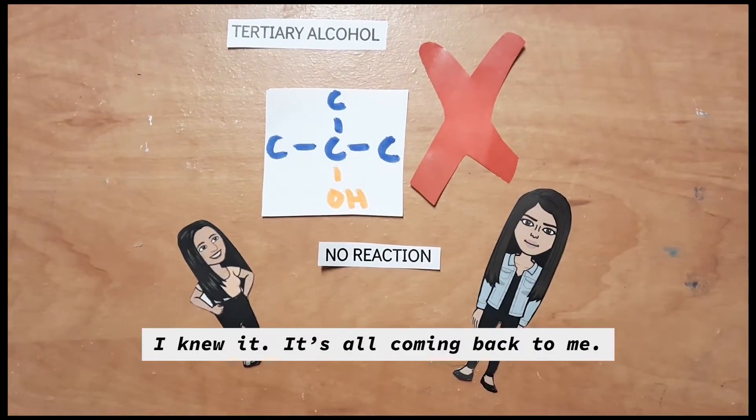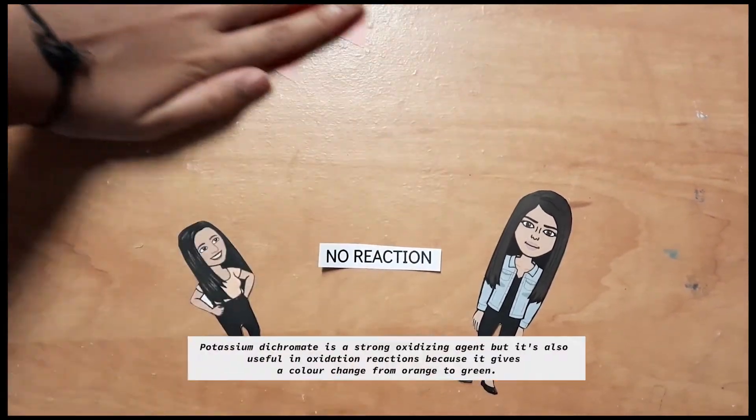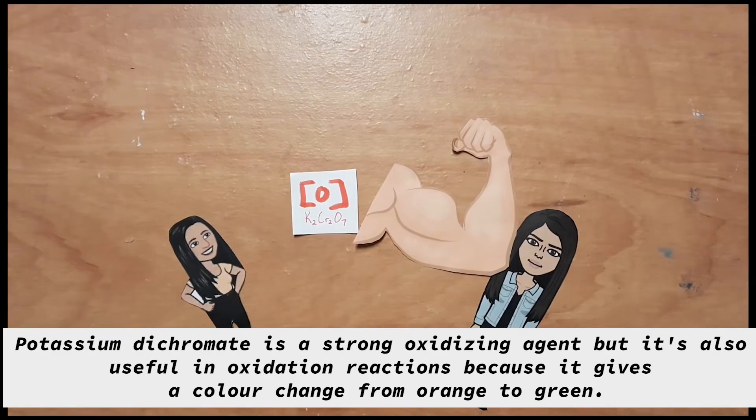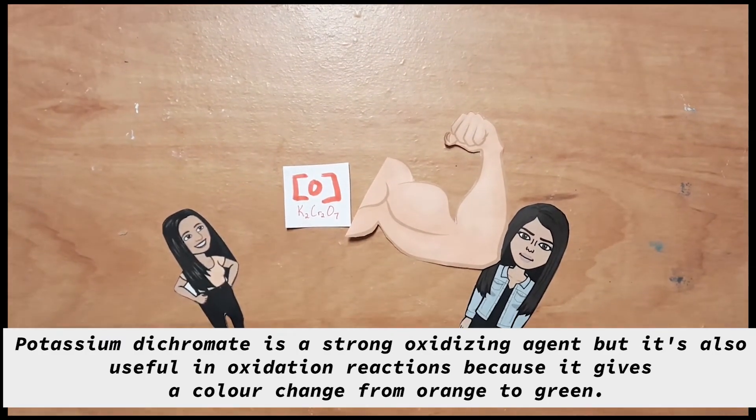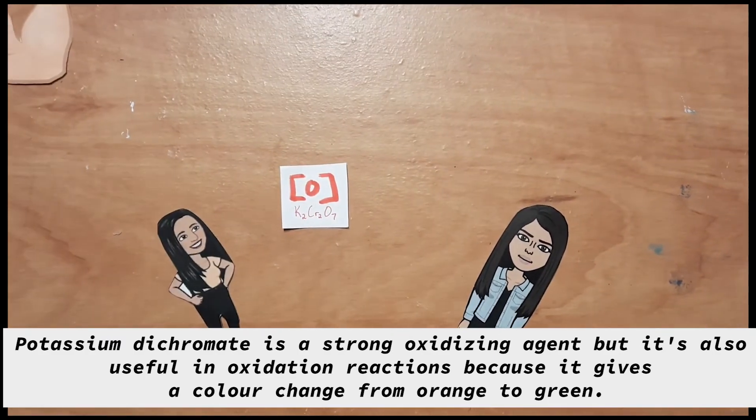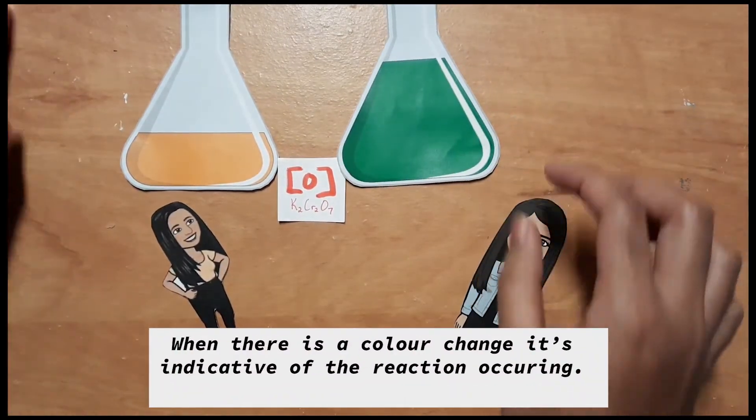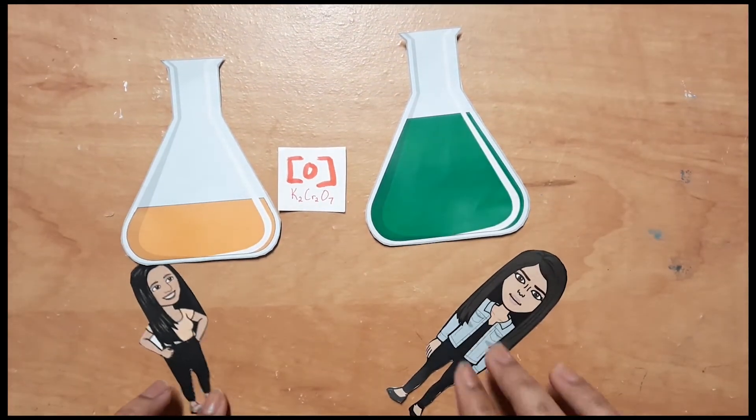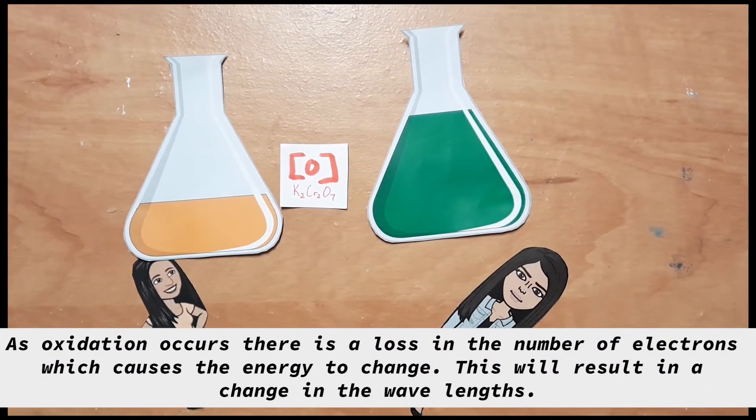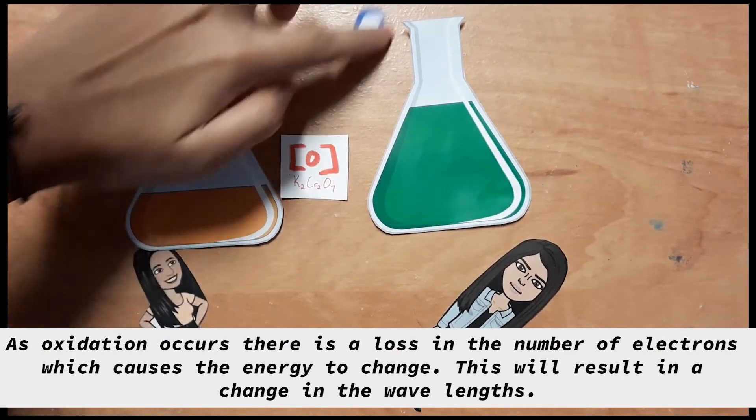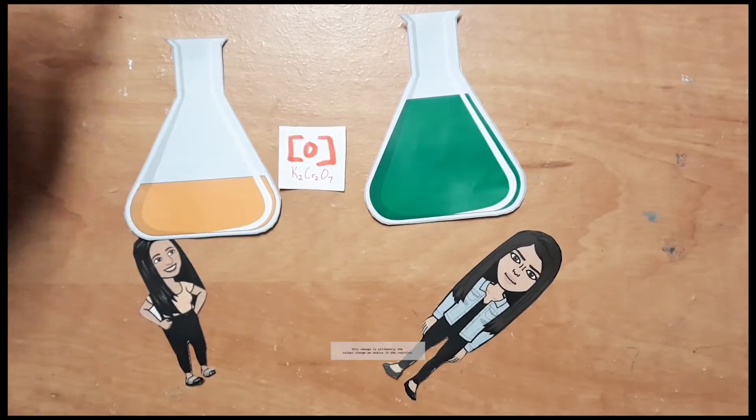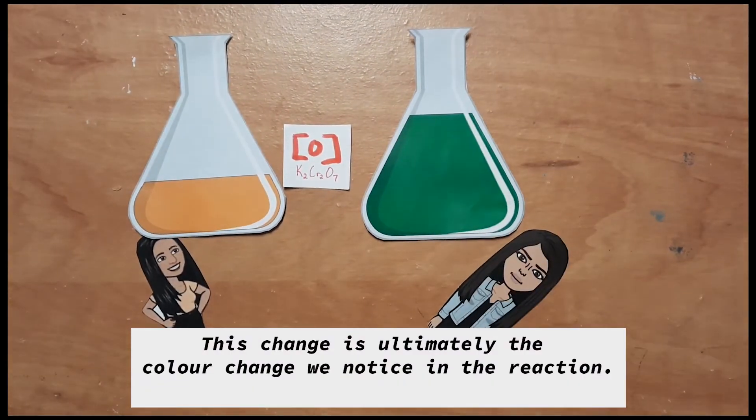I knew it! It's all coming back to me. Potassium dichromate is a strong oxidizing agent, but it's also useful in oxidizing reactions because it gives a color change from orange to green. When there's a color change, it's indicative of the reaction occurring. As oxidation occurs, there's a loss in the number of electrons that causes the energy to change. This will result in a change in the wavelengths. This change is ultimately the color change we noticed in the reaction.